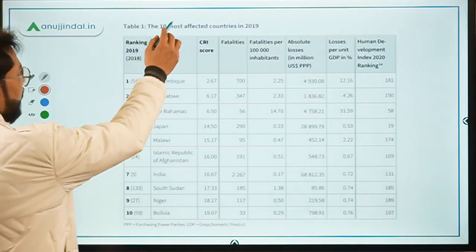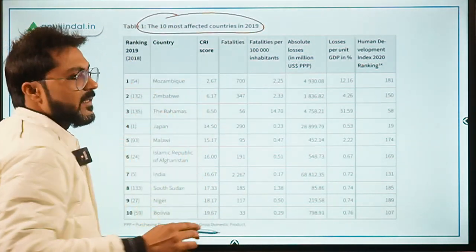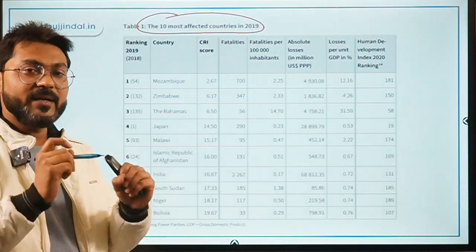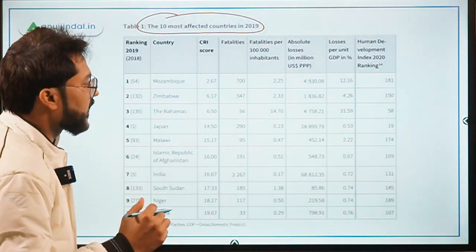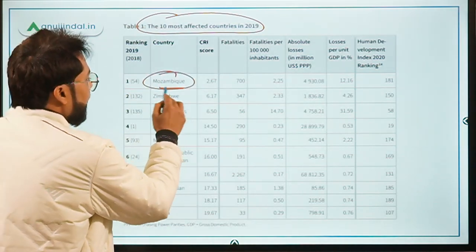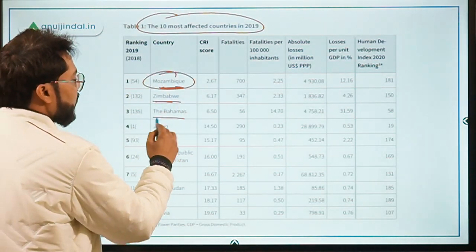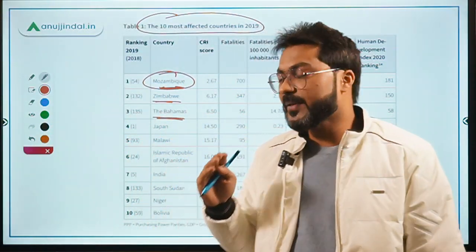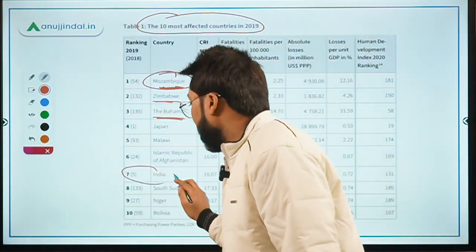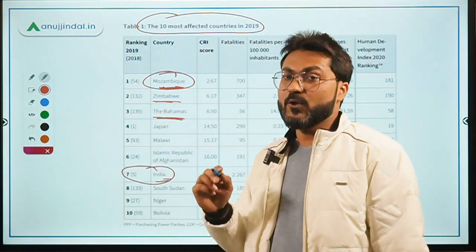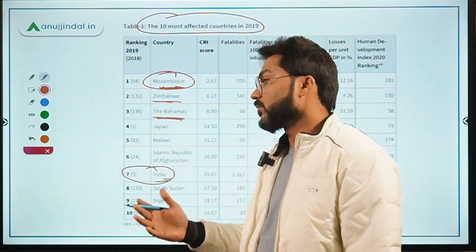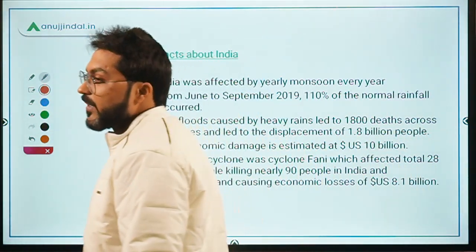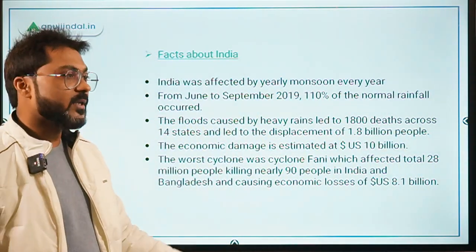Looking at the top countries most affected by climate change in 2019: number one was Mozambique, number two was Zimbabwe, and number three was the Bahamas. Do remember these top three countries. India is ranked 7th in the Global Climate Risk Index 2020-21.